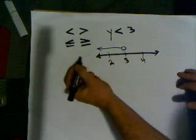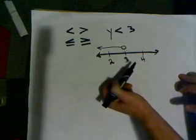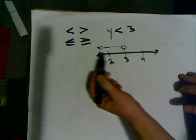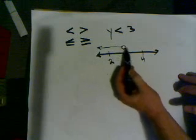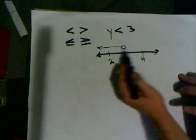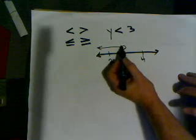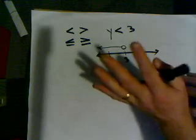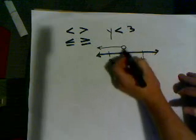Another number that's over here would be 0. If I put in 0, 0 is less than 3. That's also true. Now, I can get as close to 3 as I want, but 3 doesn't work. 2.99999999. That's really close to 3, but it's not 3. That works. That's less than 3, but 3 does not work. That's why we have to have an open circle.